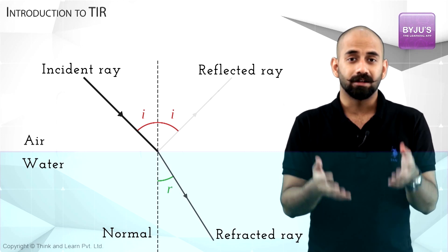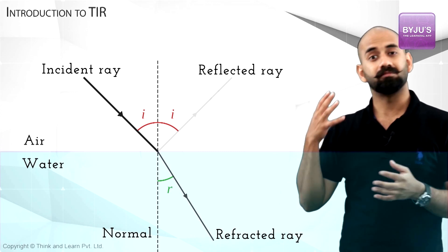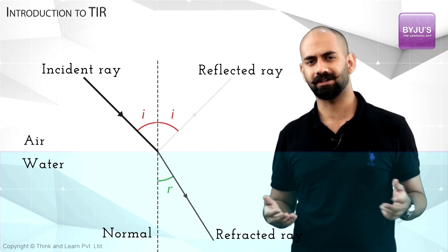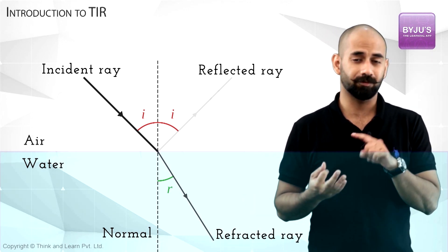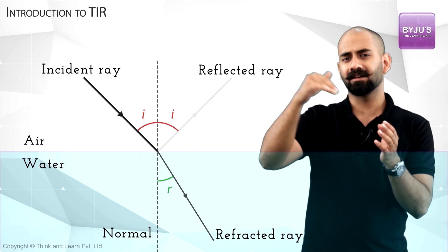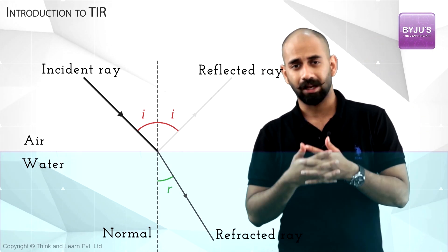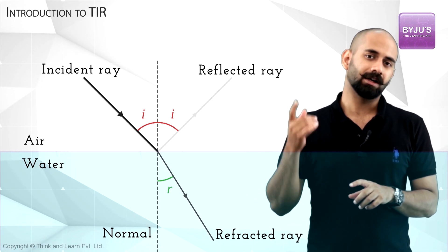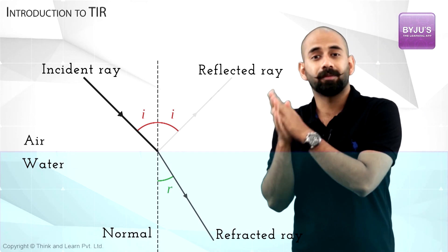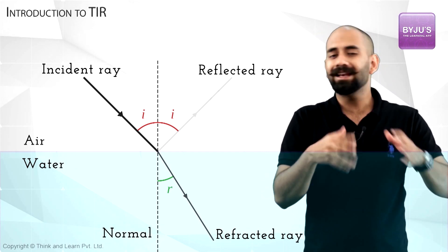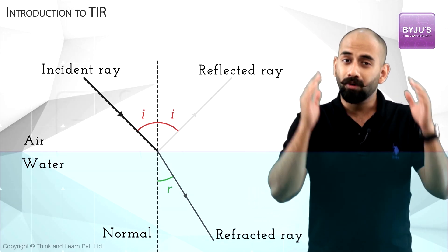Some of it gets absorbed as well. So if you remember, I told you that when light interacts with an interface, there are three kinds of phenomena: reflection, refraction, and absorption. So when light is hitting a transparent medium like water, three things happen. It's not true that when light moves from air to water, or water to air, only refraction occurs.